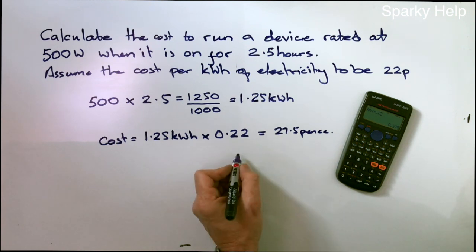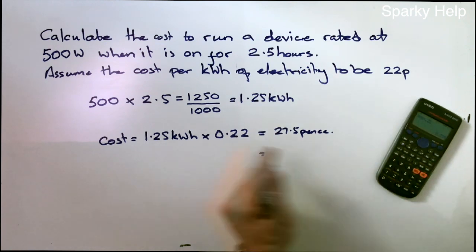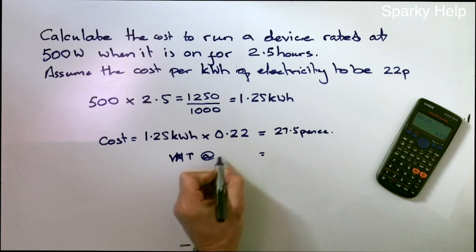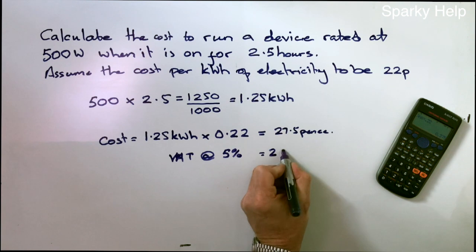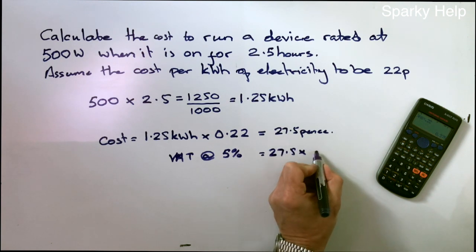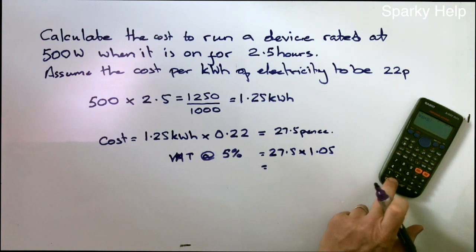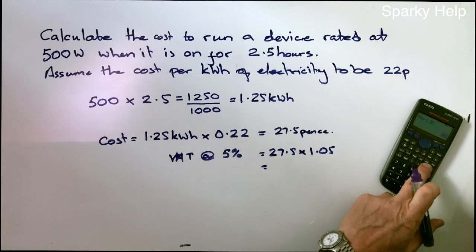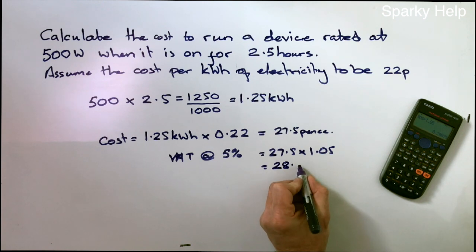However, we add 5% VAT onto this, which is what your bill would actually be. So to add VAT at 5%, 27.5 times 1.05. So 28.9 pence.